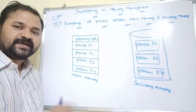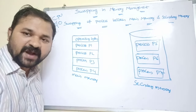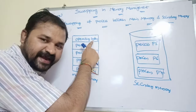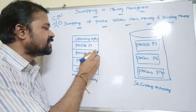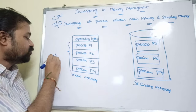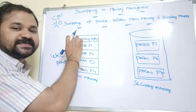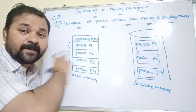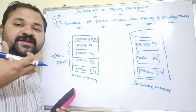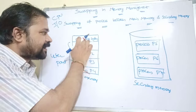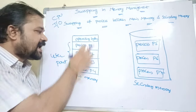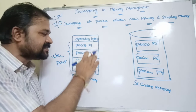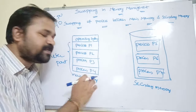Let us take this example of a multi-programming system. In a multi-programming system, we have to divide the main memory into two parts. The first part stores the operating system, whereas the second part stores user processes. This user part is subdivided into various parts in order to store the processes. The first part contains the operating system, and the second part is divided into four partitions containing processes P1, P2, P3, and P4.